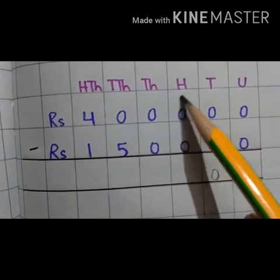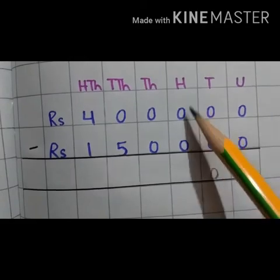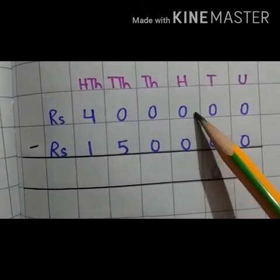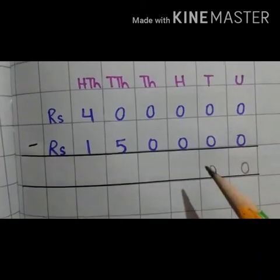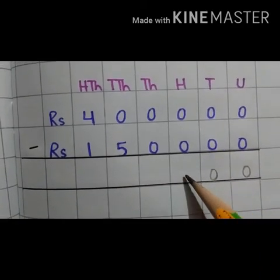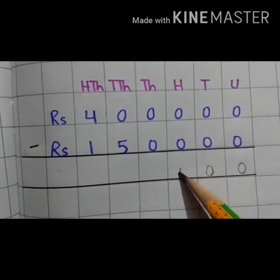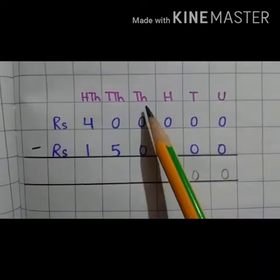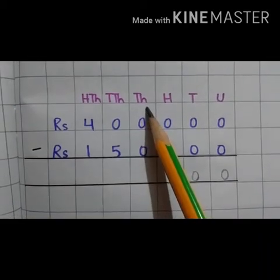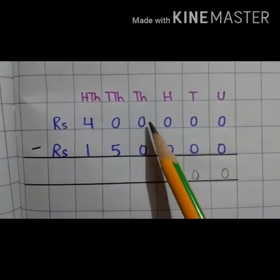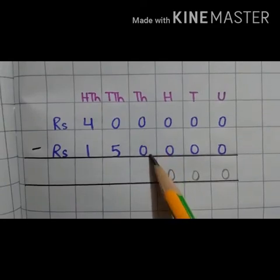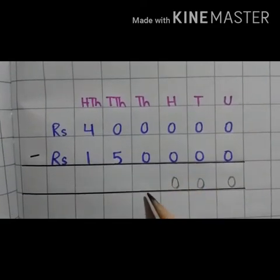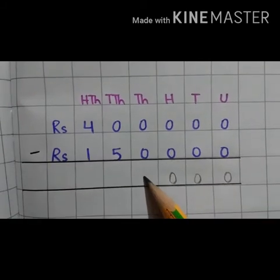Now move to the hundred place. Hundred place we have 0 and 0. So 0 minus 0 is 0. Write 0 in the hundred place. Now thousand place we move. Thousand place we have 0 and 0. So 0 minus 0 is 0. Write 0 in the thousand place.